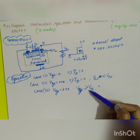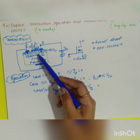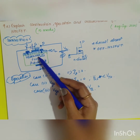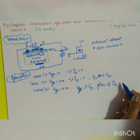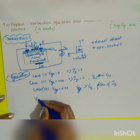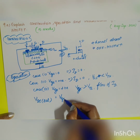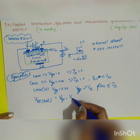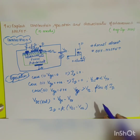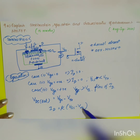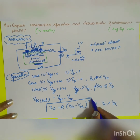When VGS is greater than the threshold voltage, the minority carriers accumulate more towards the SiO2 layer and form a channel between the two n-type semiconductors, allowing ID to flow. The key equations are: VDS(sat) = VGS − VTH, and ID = k(VGS − VTH)² for VGS greater than VTH.